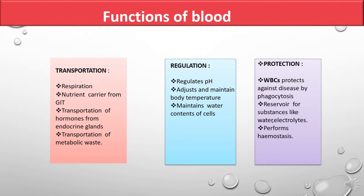Hormones from endocrine glands have no ducts, so they directly mix with the blood and are carried to the target organ. Blood also transports metabolic waste products. The second important function is regulation — blood regulates pH, maintains body temperature, and maintains the water content level (osmotic pressure) with the help of various proteins.